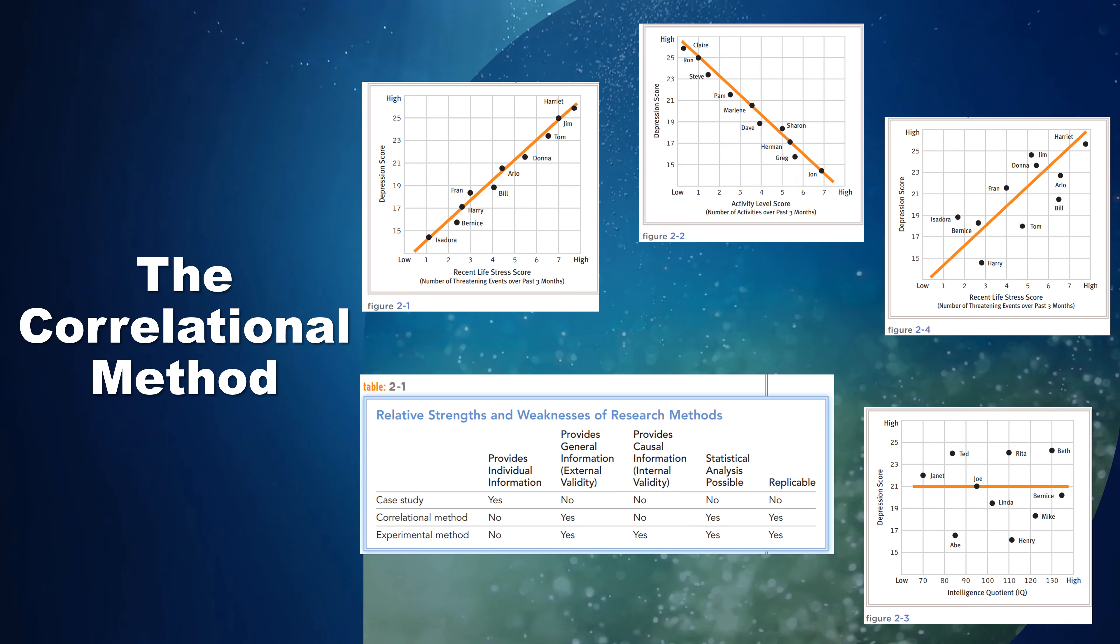What are the merits of the correlational method? The correlational method has certain advantages over the case study. First, it possesses high external validity. Because researchers measure their variables, observe large samples, and apply statistical analyses, they are in a better position to generalize their correlations to people beyond the ones they have studied.